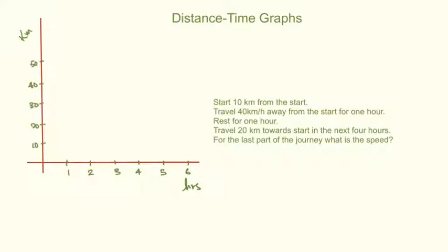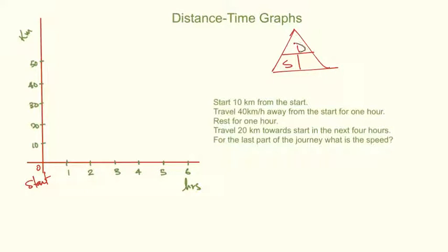This is the last one. You should be really, really confident now to start doing this on your own, so please pause the video and have a go. I'll draw the triangle in to help — speed is distance over time. Right, let's go. This time we're going to start 10 kilometers from the start. 10 kilometers from the start is just at this point here, so we're starting here.